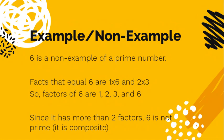So for example, 6 is not a prime number. Facts that equal 6 are 1 times 6 and 2 times 3. So 1, 6, 2, and 3 are factors of 6. Since there's more than two factors, 6 is not prime. It's composite.